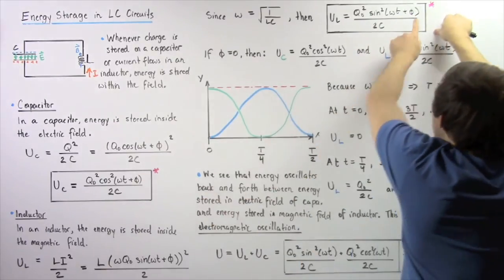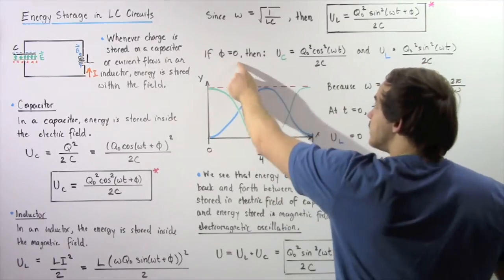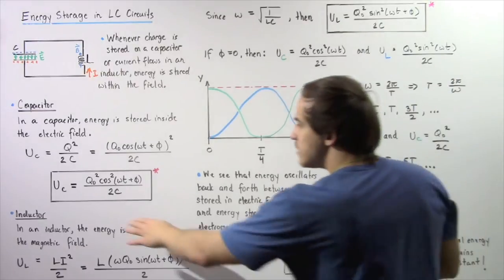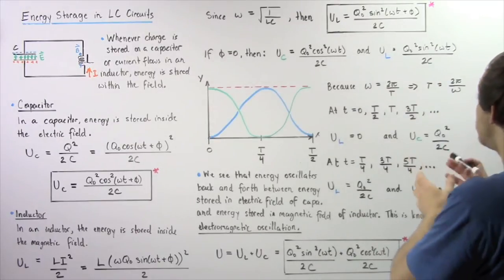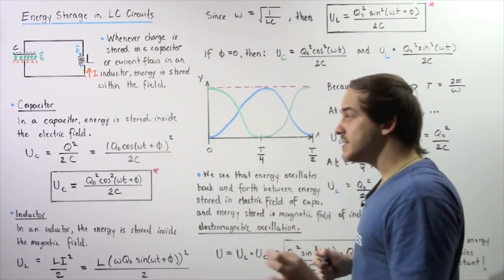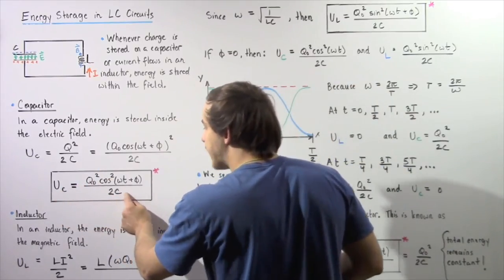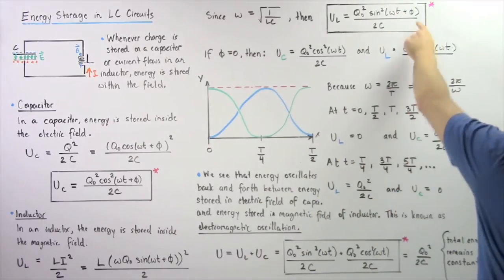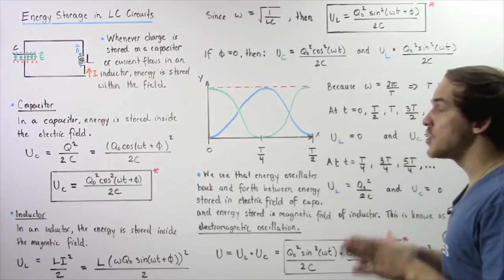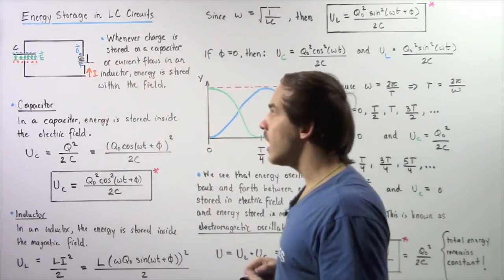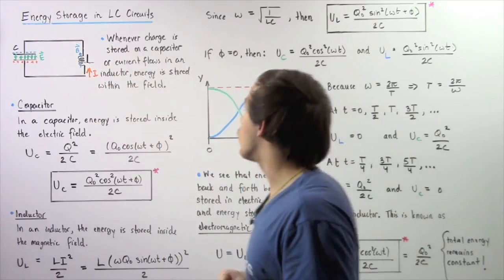The phase angle in both equations simply depends on our initial conditions. Let's suppose that φ, the phase angle, is zero. With φ equal to zero, our UC becomes q₀ squared divided by 2C. Likewise, at time zero with phase angle zero, sine of zero is zero, and so we see that at the initial time of zero seconds, because there is no electric current inside our inductor, there is no energy stored within our inductor — and all the energy is stored within our capacitor.